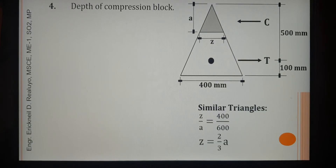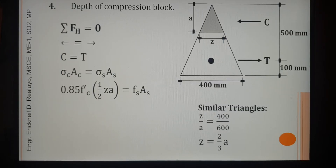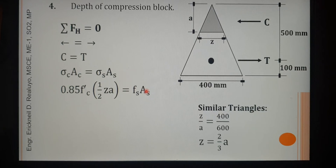Now let us take summation of horizontal forces equal to zero, since the beam should be in equilibrium — forces directed to the left equal forces directed to the right. Therefore C equals T. Forces equal stress times area; the stress of concrete is 0.85 F′c — the equivalent rectangular uniform stress proposed by Charles Whitney. The area of the compression block is one-half base times height (area of a triangle). For T, the stress is FS and the area is AS for four 32mm diameter bars.